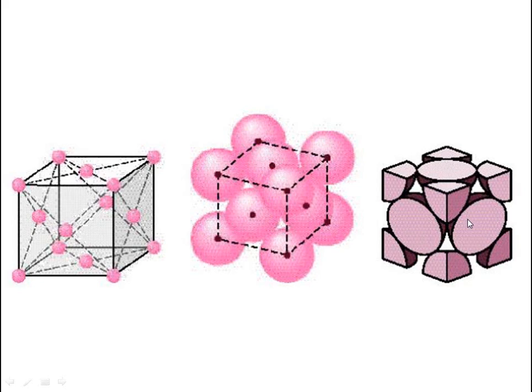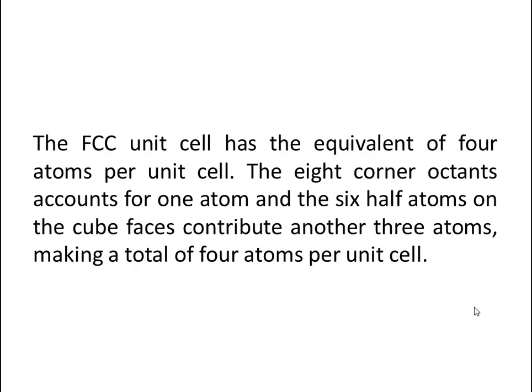Looking at the FCC unit cell, the six face-centered atoms each contribute one-half atom: opposite faces pair up to make one atom each, giving three atoms from the faces. The eight corner positions each contribute one-eighth, together making one more atom. So the FCC unit cell has a total equivalent of four atoms per unit cell.